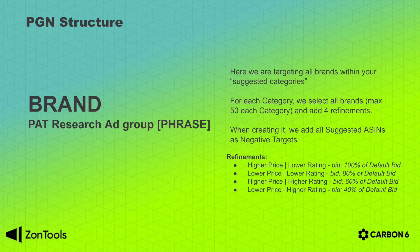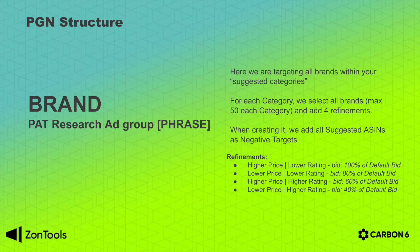The third ad group we're going to create for you will be the brand ad group. This ad group is very similar to a phrase campaign, like a research ad group. Here we will target all brands within your suggested categories based on the SKUs you submit for advertisement. Amazon will tell us what categories the items are relevant to, and based on those categories Amazon will give us the top 50 brands. Within each of those categories we identify the top 50 brands of your competitors and segment their catalog in four different ways. We will bid on brands refined by higher price, lower rating — this has the highest likelihood of conversion because you're bidding on items that are more expensive but have a lower rating than yours, so we will use 100% of the default bid.